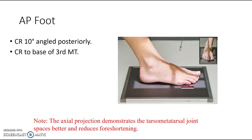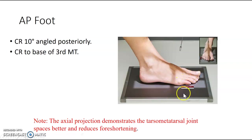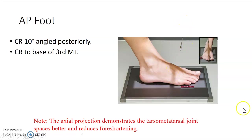For the AP foot, you're going to angle your tube 10 degrees posteriorly, with the central ray at the base of the third metatarsal, foot nicely planted on the imaging plate, ideally midline to the plate, marker on the lateral border. Use a lead arrow if possible — this demonstrates the tarsal metatarsal joint spaces better and reduces foreshortening, because we have an arch in the foot and the angle counteracts that arch.